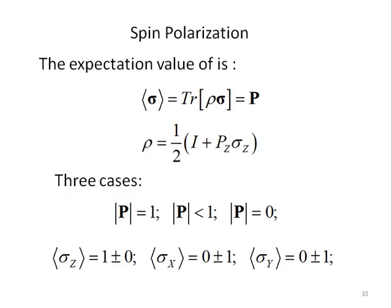This is a consequence of the Heisenberg uncertainty principle, which states that if a spin is polarized along one direction, say z, then it cannot be polarized in any other direction. The system is in a pure state defined by the z-axis.